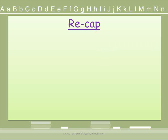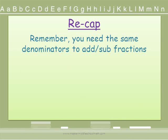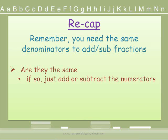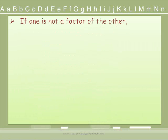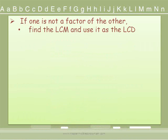Let's recap what we have learned today. You need the same denominators in order to add or subtract fractions — that is the rule. Ask yourself: are the denominators the same? If so, simply add or subtract the numerators. If not, look at the denominators and ask yourself, is one a factor of the other? If so, use the larger denominator as your common denominator — it will save you a little bit of work. If one denominator is not a factor of the other, you will need to find the least common multiple and use it as your least common denominator.